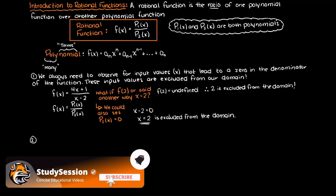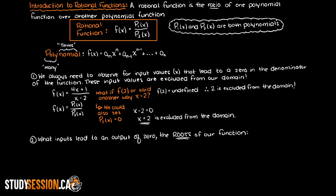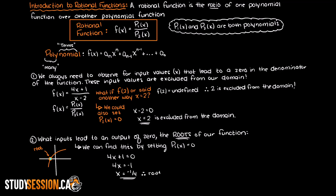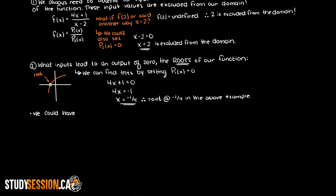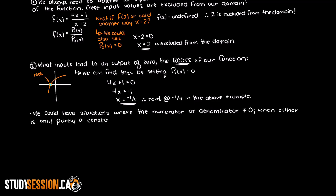Secondly, we want to know what inputs will make our numerator 0. These are important as they are the roots of our function — that is where the function crosses the x-axis. You can find this by simply setting the numerator, or polynomial 1, equal to 0 and solving for x. In both cases it is entirely possible to have rational functions that do not have zeros in the numerator or denominator, and this will occur when you simply have a constant in the numerator or denominator.